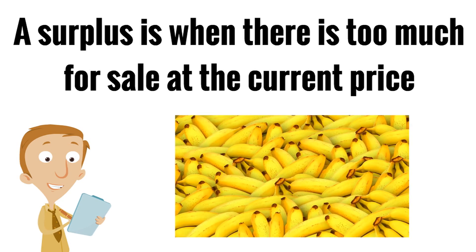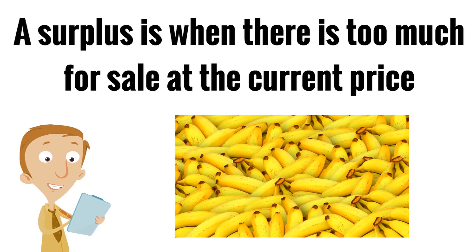Our example of a surplus is the bananas. These bananas are all ripe and ready to turn — they need to get sold quickly to families and people who want to eat them. But a surplus is when you have too much for sale; there are too many bananas.